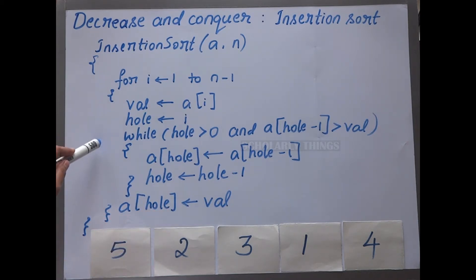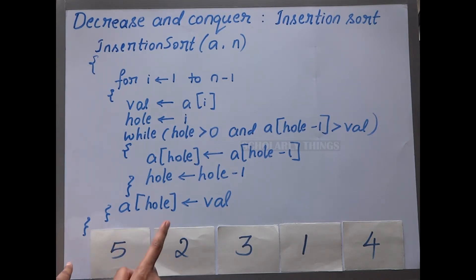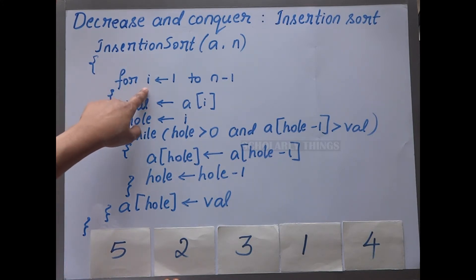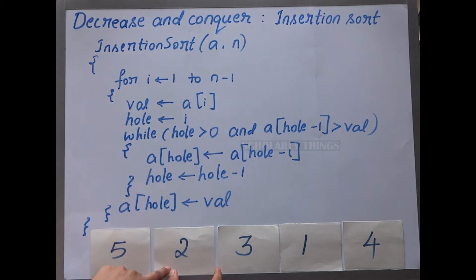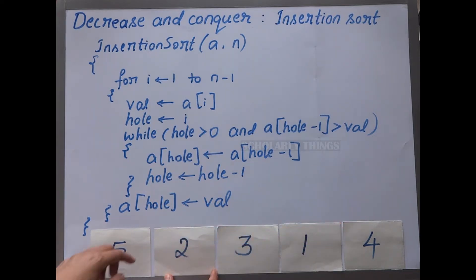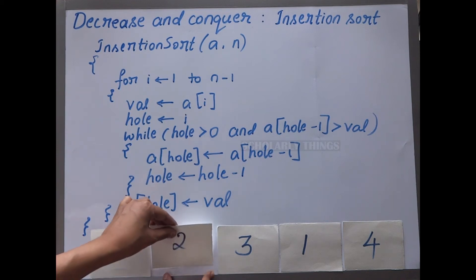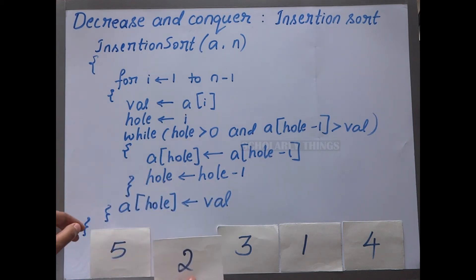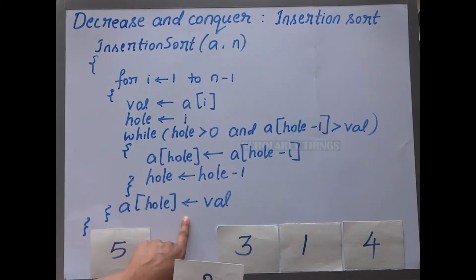Let's understand this with an example. Initially we assume the first element is sorted, because an array of one element is already sorted. We start with i equal to 1. The positions are 0, 1, 2, 3, and 4. We start at i equal to 1 and remove that element, which creates a hole in that place.